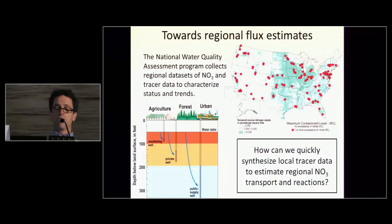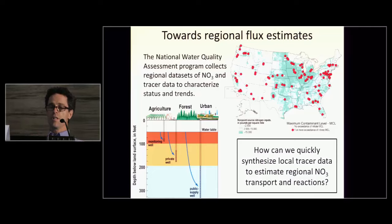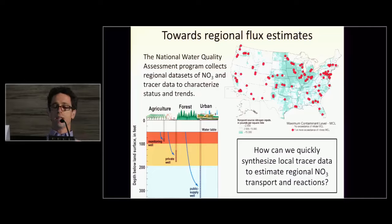The overarching goal here is working towards making regional flux estimates — not so much synthesizing large data sets in terms of spatial variability, and not so much in terms of intensive small-scale studies, but more a middle ground of having some mechanistic understanding of what's happening at a regional scale. NACWA has been collecting these large data sets across the country.